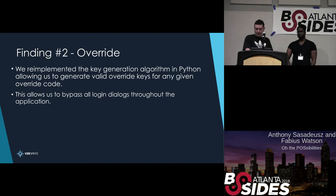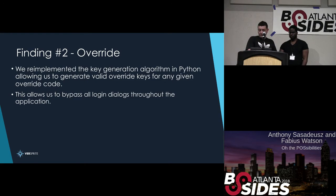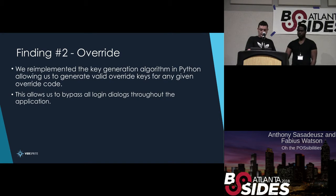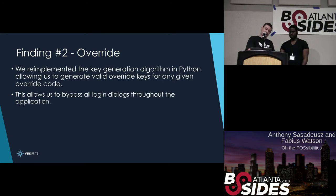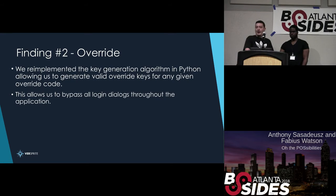Here's the login screen. We hit Override and are given an override code. We run our script, input the code, get our key, enter the key in the override prompt, and we log in without any credentials. This essentially gives you access to open the cash register or perform any administrative action.